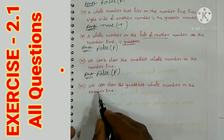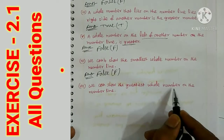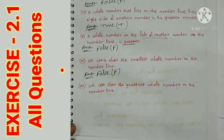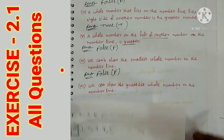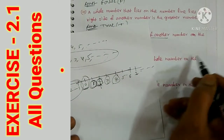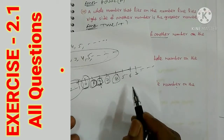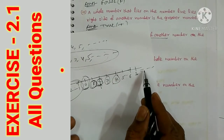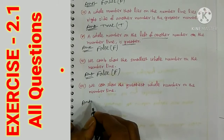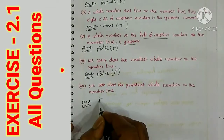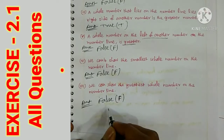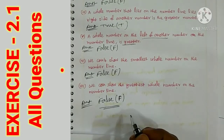Seventh bit: we can show the greatest whole number on the number line. On the number line, we can write numbers one by one up to infinity, so we cannot say which is the last number. Therefore we cannot show the highest whole number — this statement is also false.